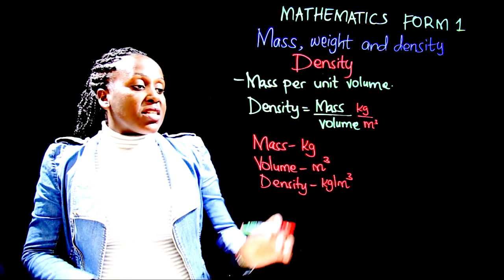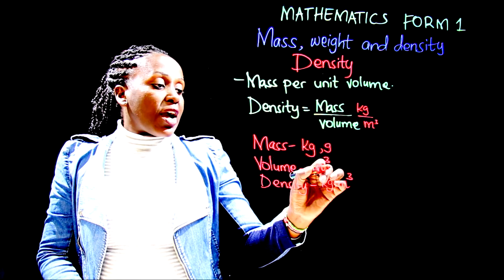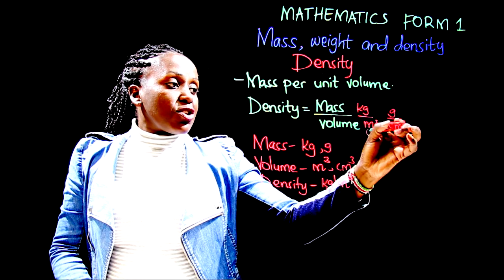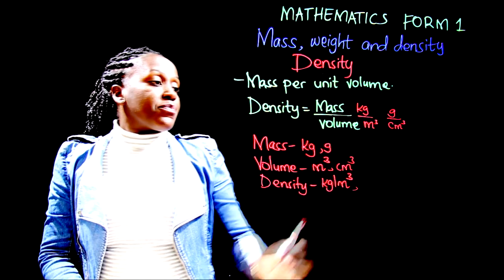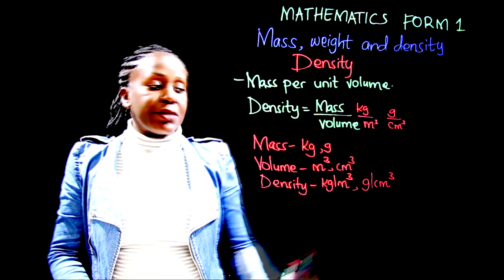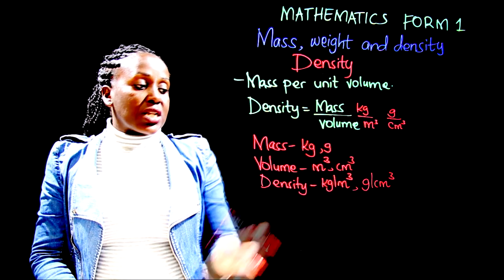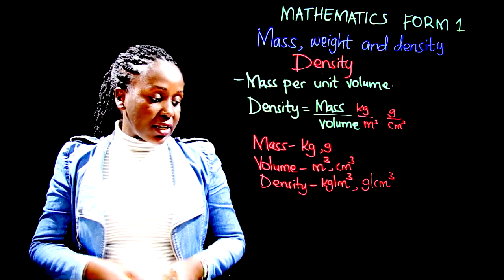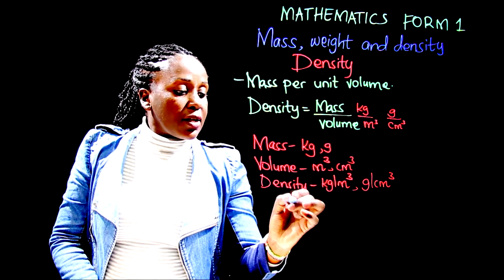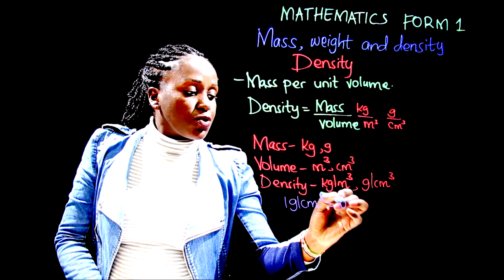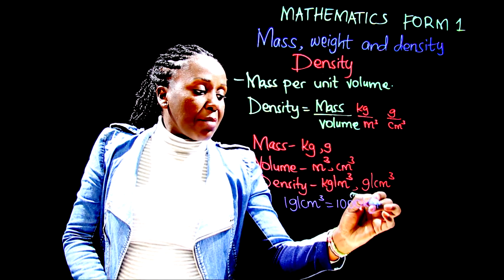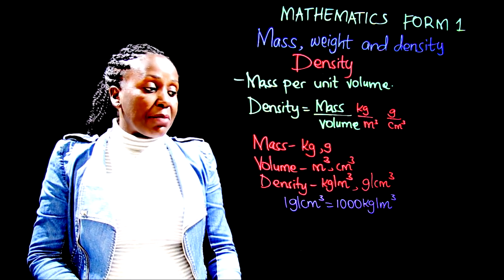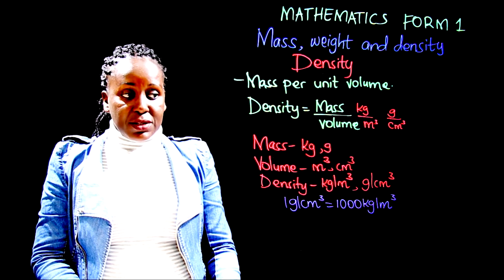Mass can also be measured in grams and volume in centimeters cubed, so the other unit for density is grams per centimeters cubed. To convert between the two units: one gram per centimeters cubed equals one thousand kilograms per meters cubed. Use this relationship whenever you need to convert between the two density units.